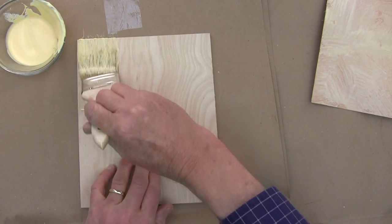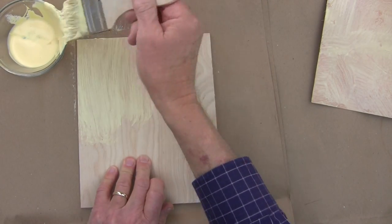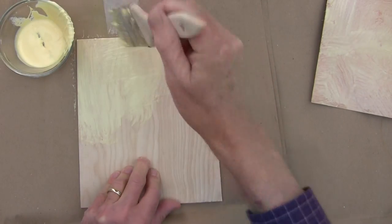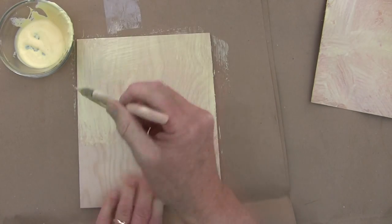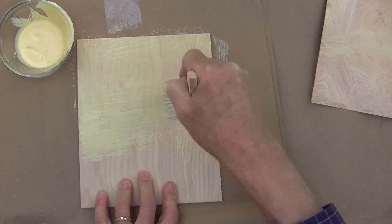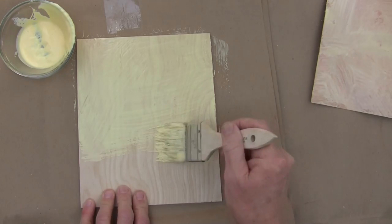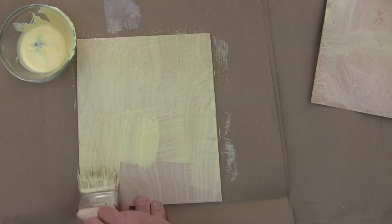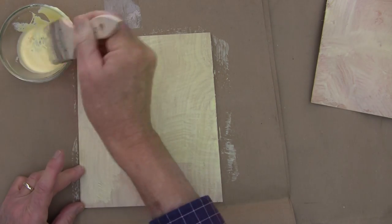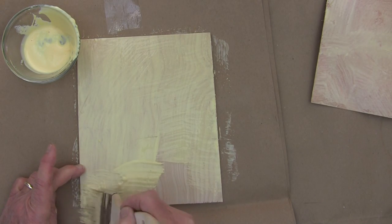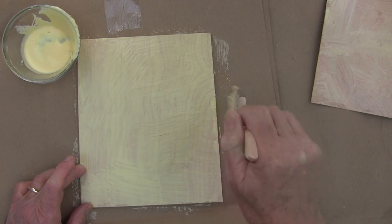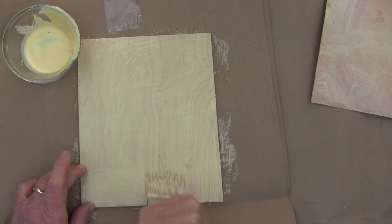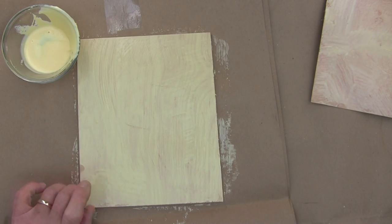Too much glue will cause a lot of squeeze out once this is going to be clamped and put under pressure. Now, I might put a little bit too much glue on here today because maybe I would like to illustrate what happens when you clamp it and you get some squeeze out. Now too much glue actually isn't going to give you the best glue bond. And of course, too little glue isn't going to give you the best glue bond.